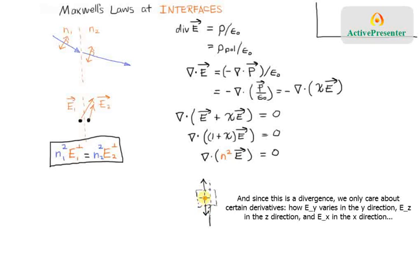So N squared E is essentially the same on the top and the bottom and N squared E_Z is essentially the same on the front and the back, but remember I've got an N1 over here and an N2 over here.